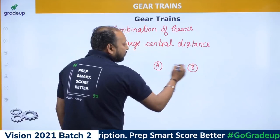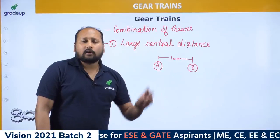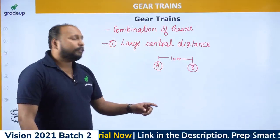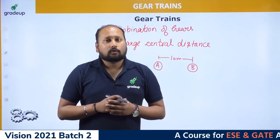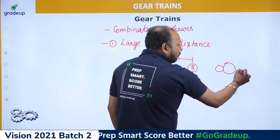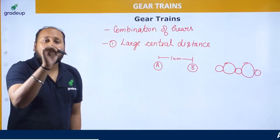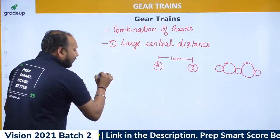For example, if I want to transmit power from body A to body B over a distance of 10 meters, one option is to use two large-diameter gears, but the cost of manufacturing large gears would be very high. Instead, using small gears connected in a gear train drastically reduces the cost of power transmission.